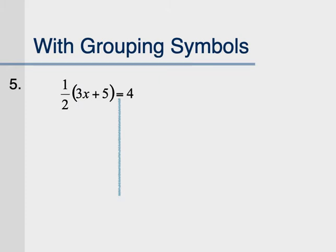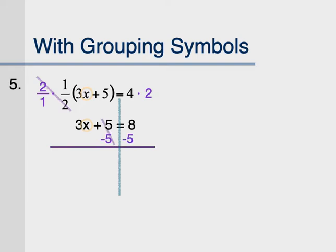Draw a line under the equal sign. This is like number 4 — you could distribute 1 half, but it would probably be easier to multiply by the reciprocal. The reciprocal of 1 half is 2 over 1, or just 2, so multiplying by 2 over 1 cancels it out. Whatever you do to one side you must do to the other, but since the other side is a whole number 4, write the 2 in the whole number version. That cancels out what's outside the parentheses. Circle the x, decide whether to cancel the 3 or the 5 first — whichever is farther from x — then divide by 3 to get your final answer.